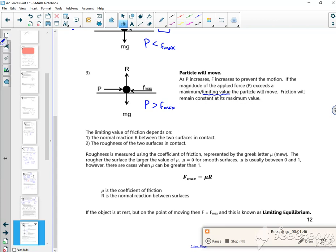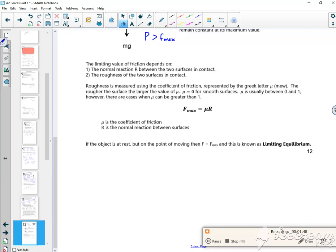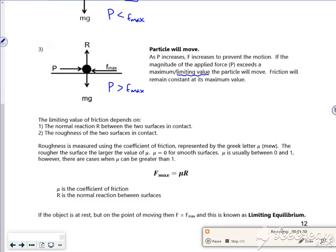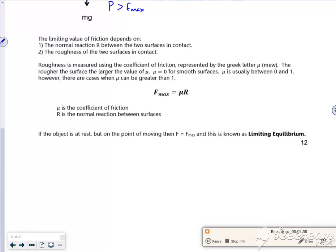Now we've got an equation for F max. And it has to do with it pressing down on the surface and how bubbly, not smooth, how rough the surface is. So F max, my maximum friction, my limiting friction,